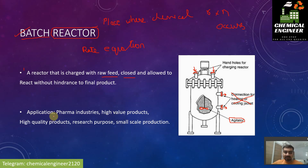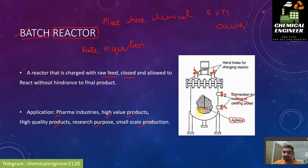The application of batch reactors is that they are used in pharma industries and for high value products. We use batch reactors only in places where we need high quality, high value — meaning high cost — products. They can also be used for research purposes or for small scale production, since batch reactors require much time for reaction.